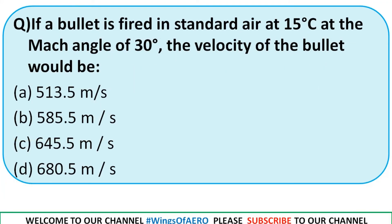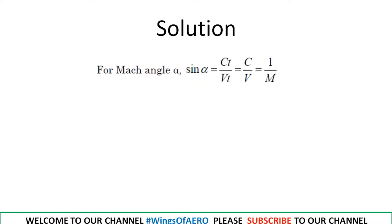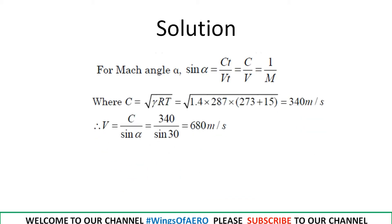If a bullet is fired in standard air at 15°C at a Mach angle of 30°, what is the velocity of the bullet? The formula for Mach angle is: sin(α) = 1/M. Alpha is given, so we can find the Mach number. The speed of sound formula is C = √(γRT).